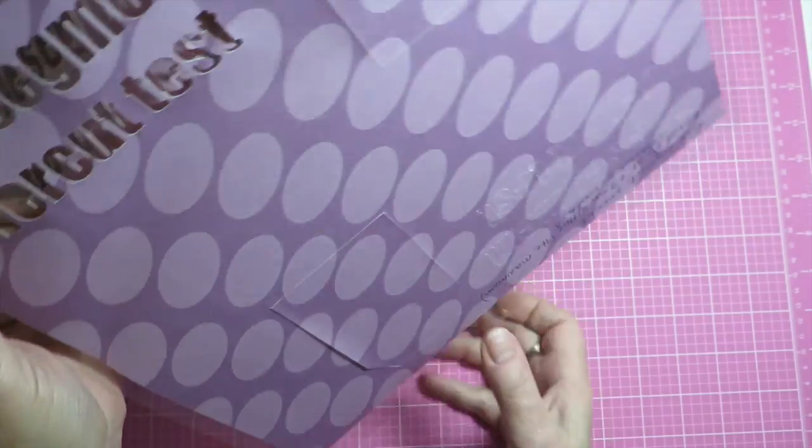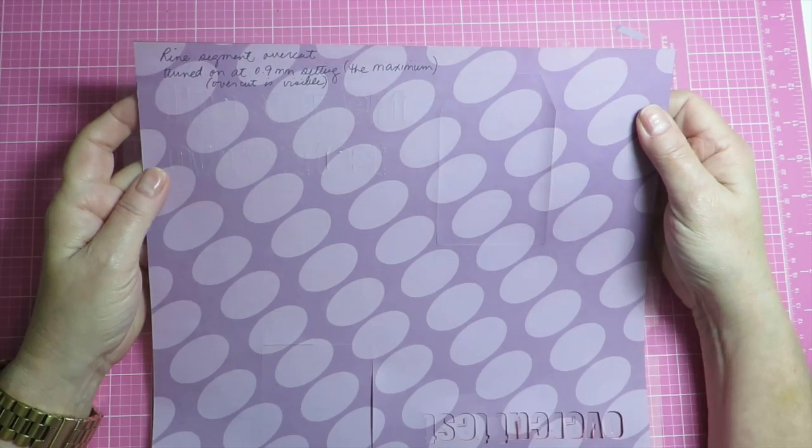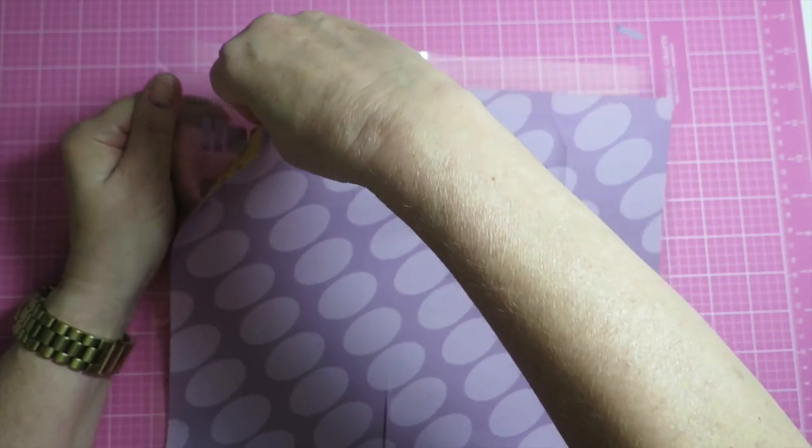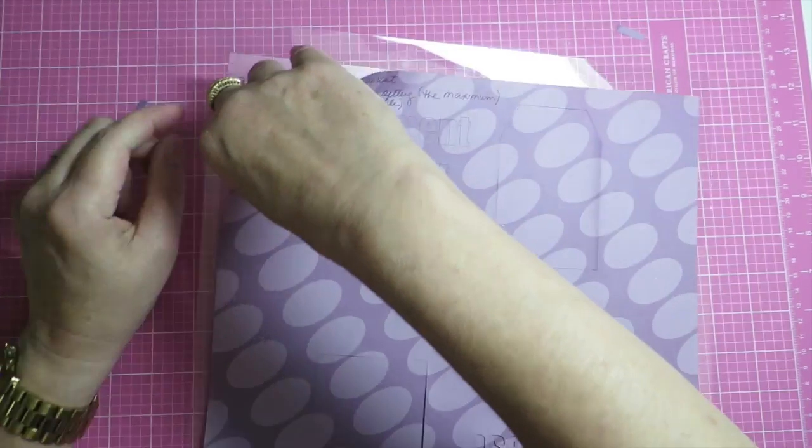And then here, this is the 0.9 millimeter setting, the maximum, and as expected it's pulling away perfectly.